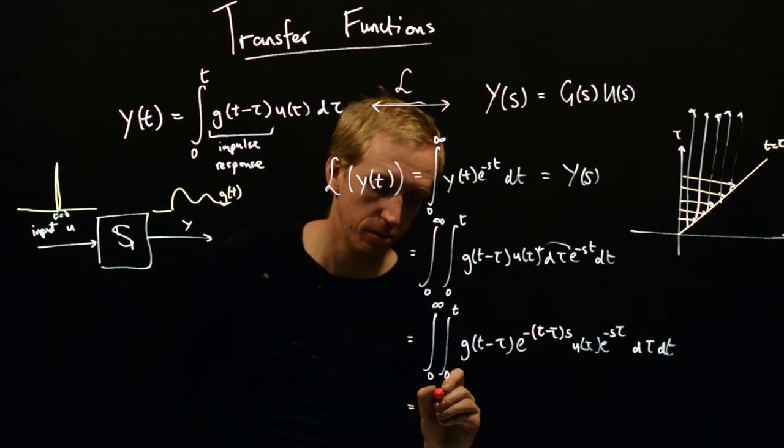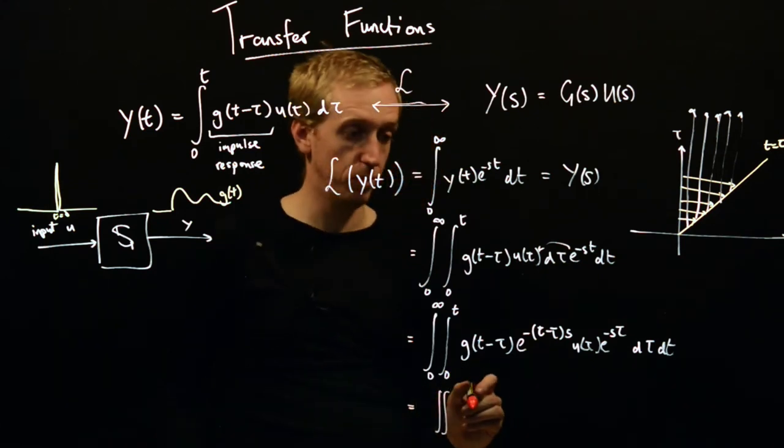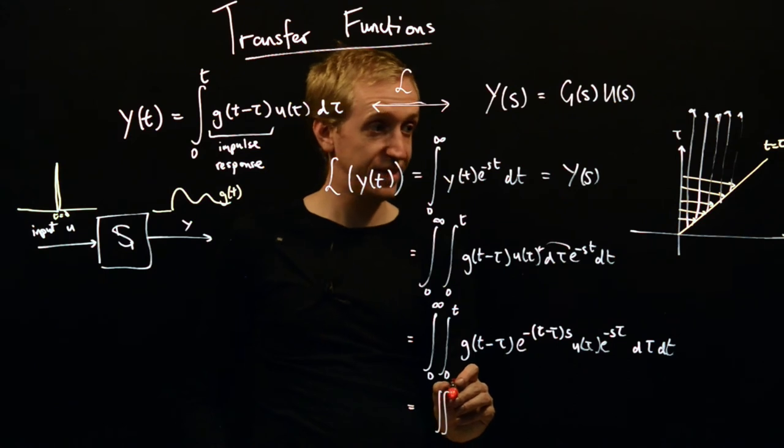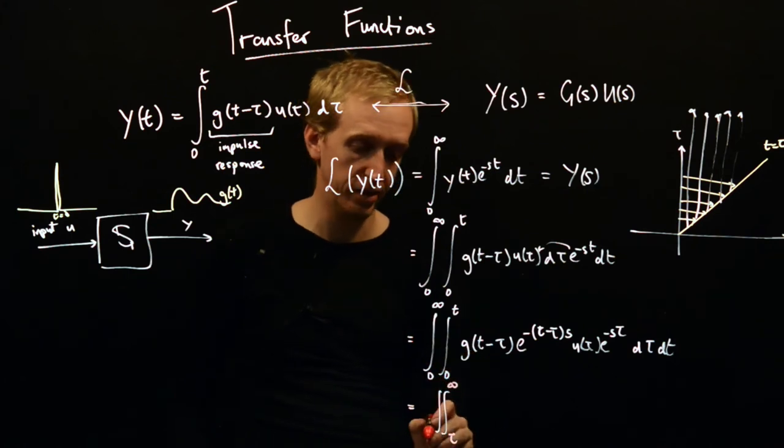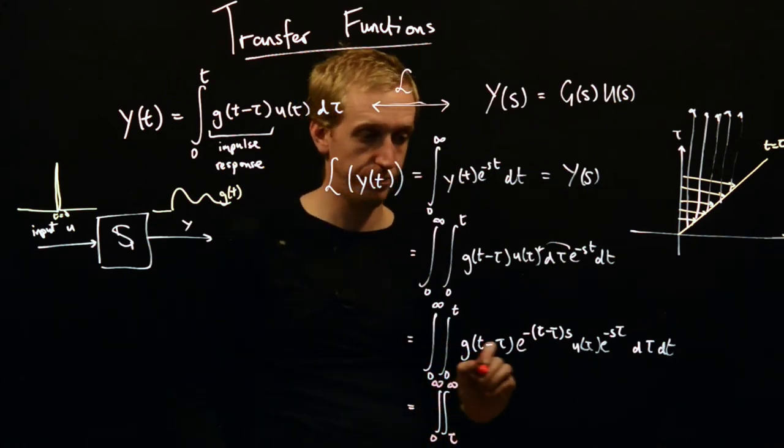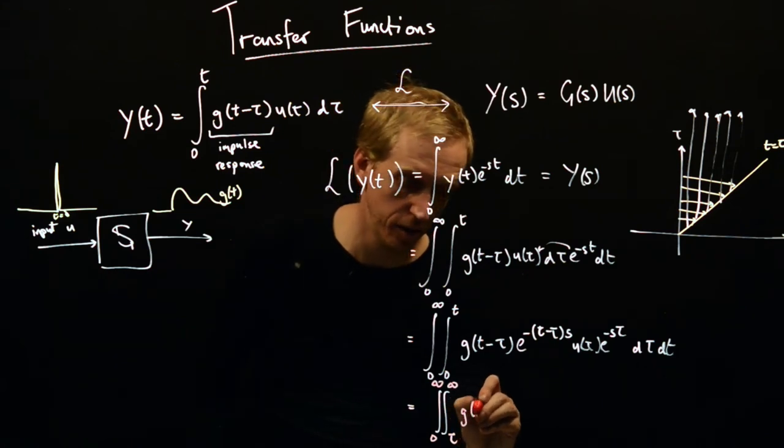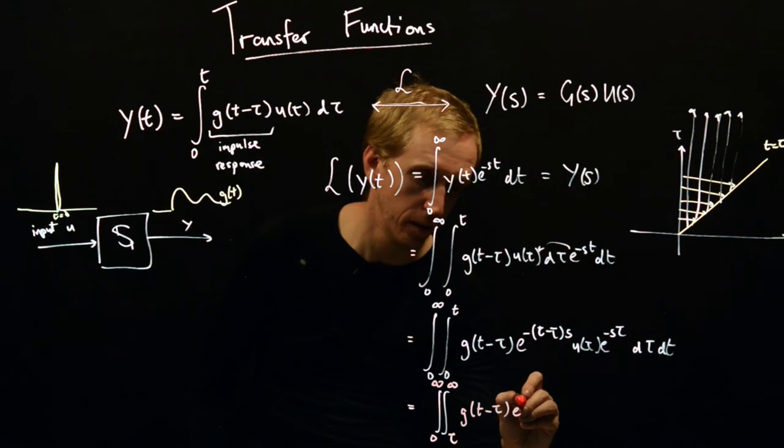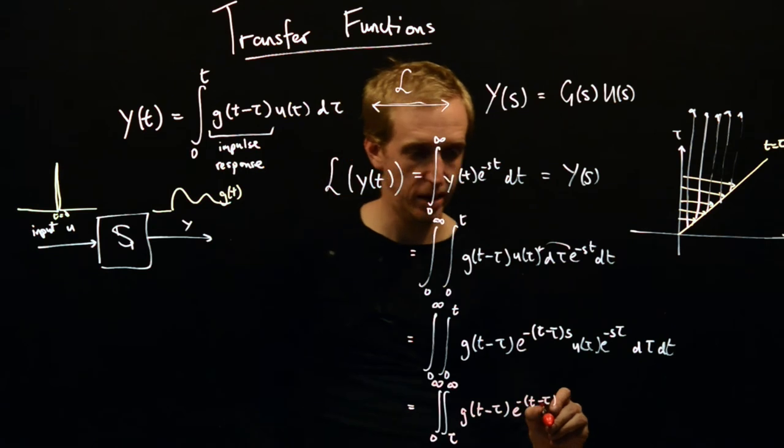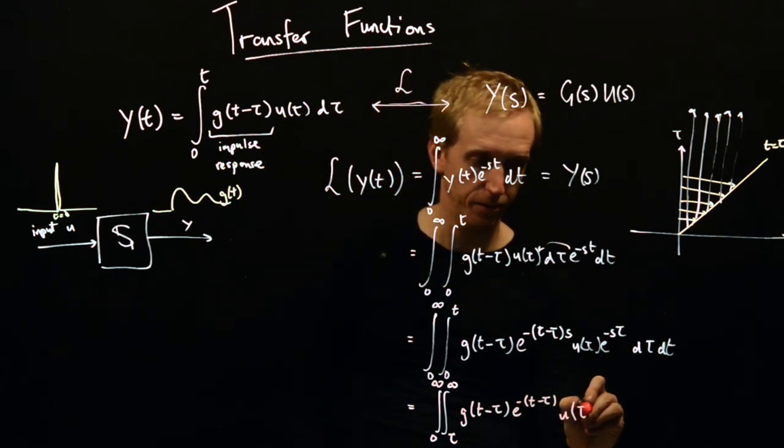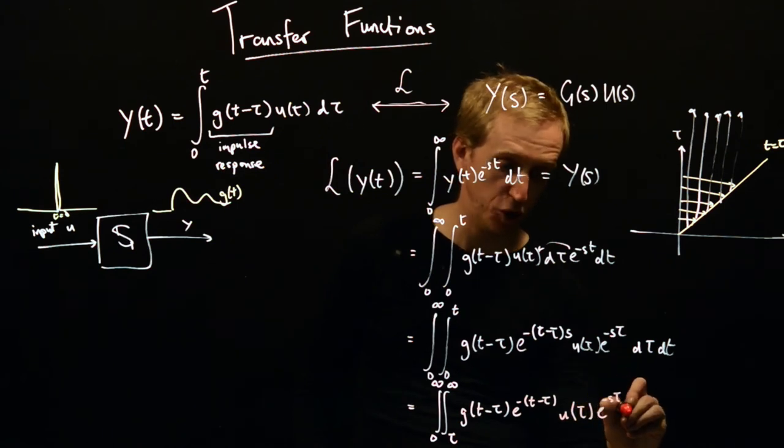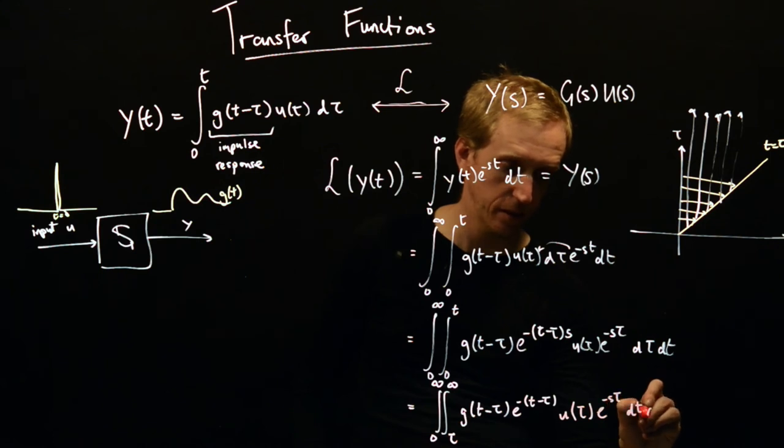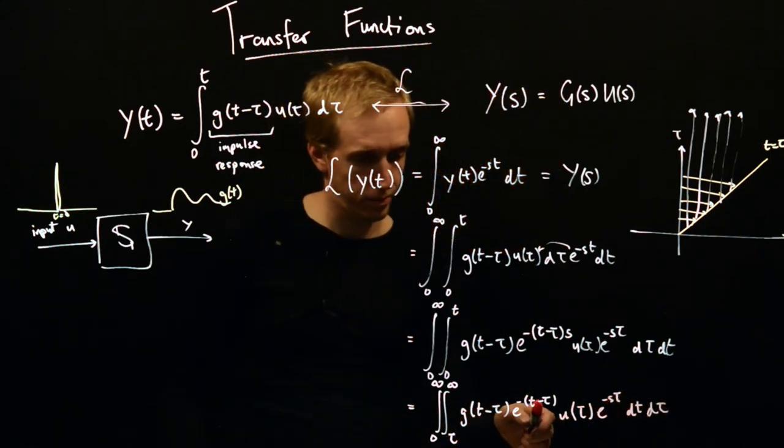Now we're integrating over t first and we integrate from tau to infinity and then we integrate this one from 0 to infinity still. And here we have g of t minus tau e to the minus t minus tau s and u of tau e to the minus s tau but we've changed the order dt d tau. Now the critical thing to notice here is the only bit that depends on t is this bit here.